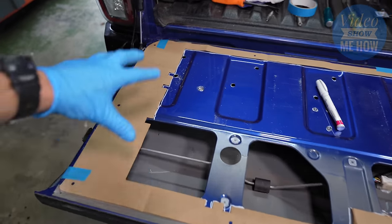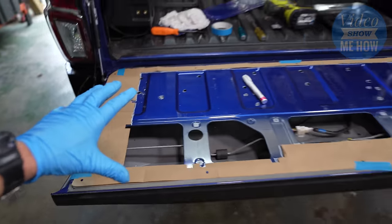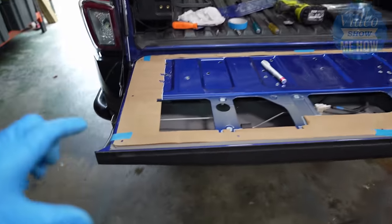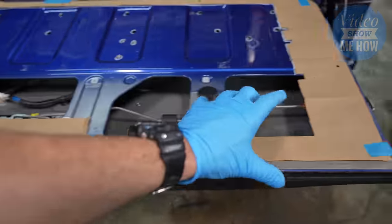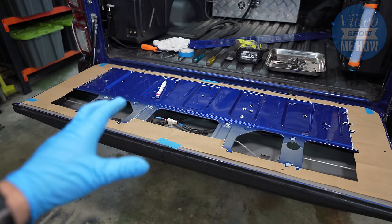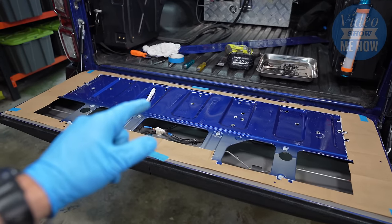And this is what it should look like once it's all marked out. You want to just take a bit of a step back at this point and just double-check yourself. Just make sure that your template is all nice and square and parallel. And once you are happy and you've taken your time to check, you want to move on to the next step.